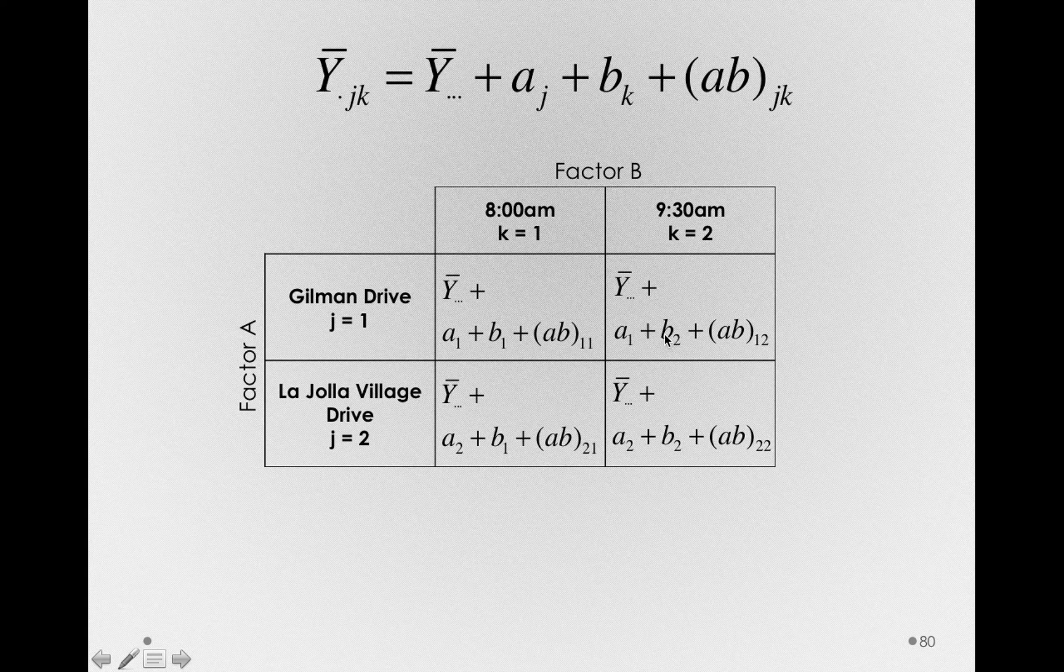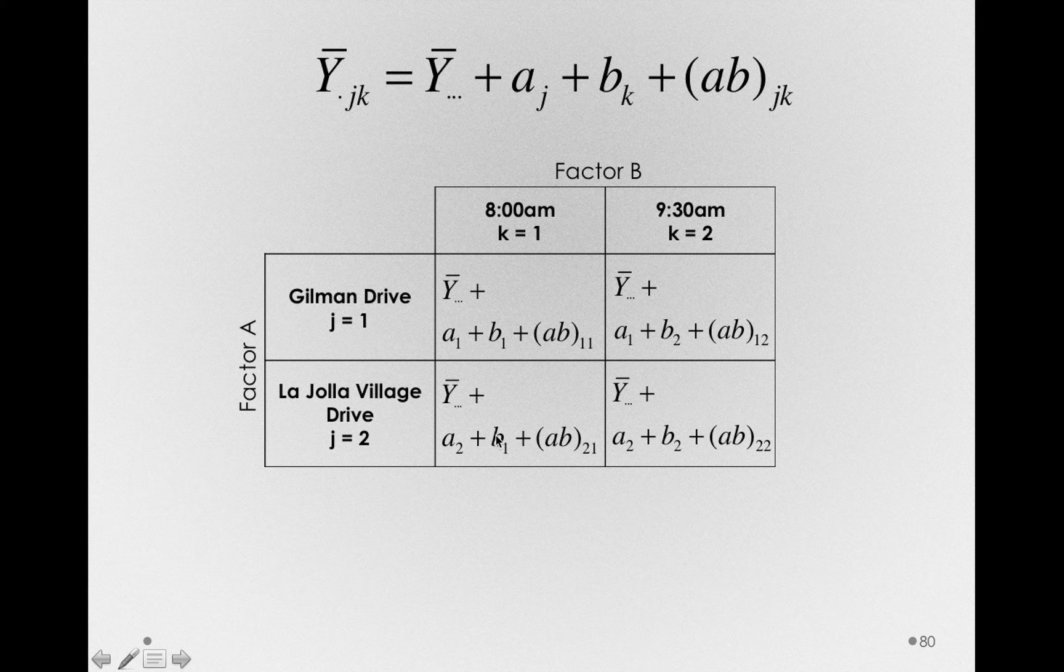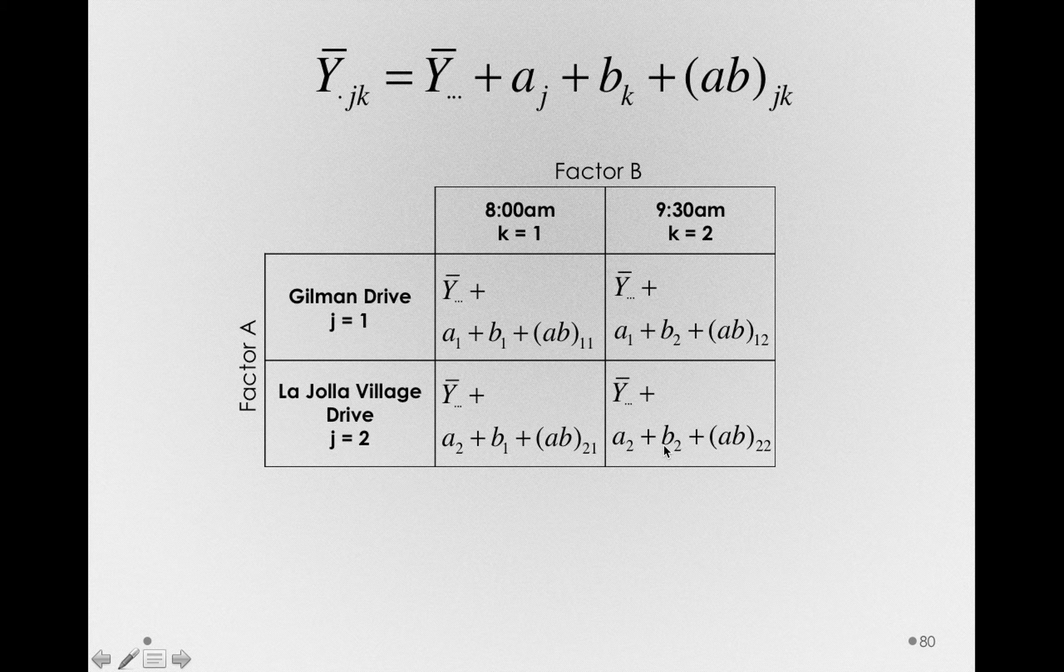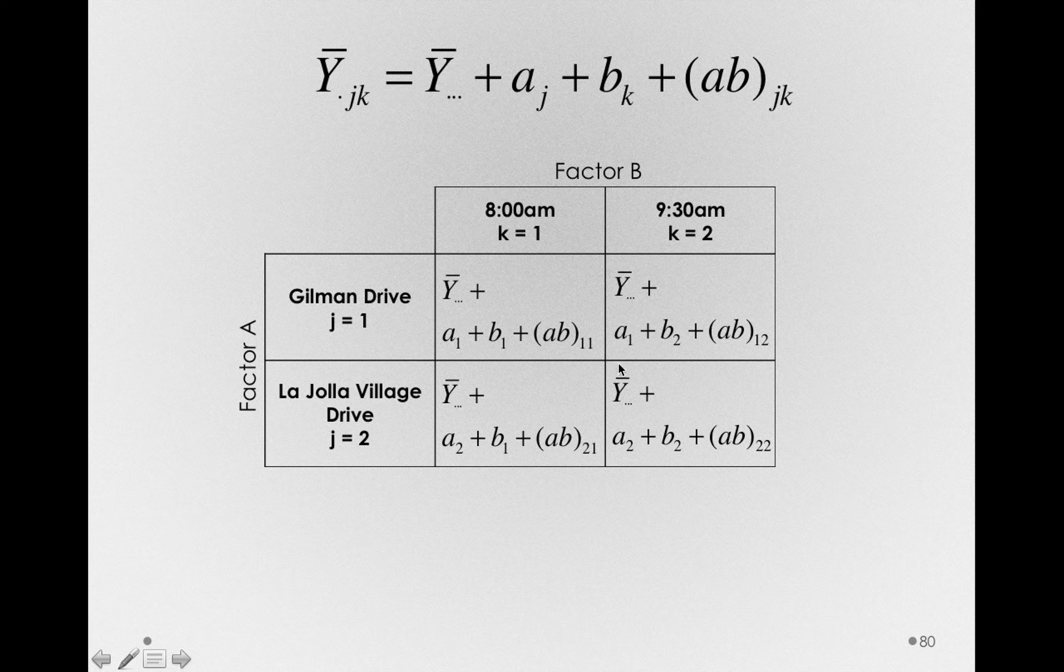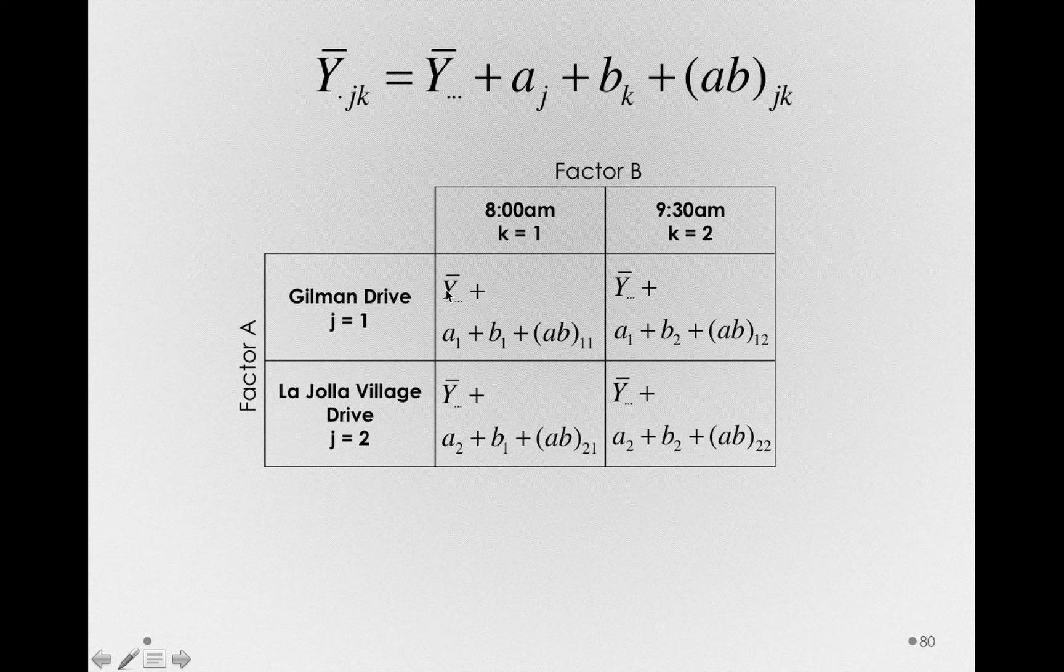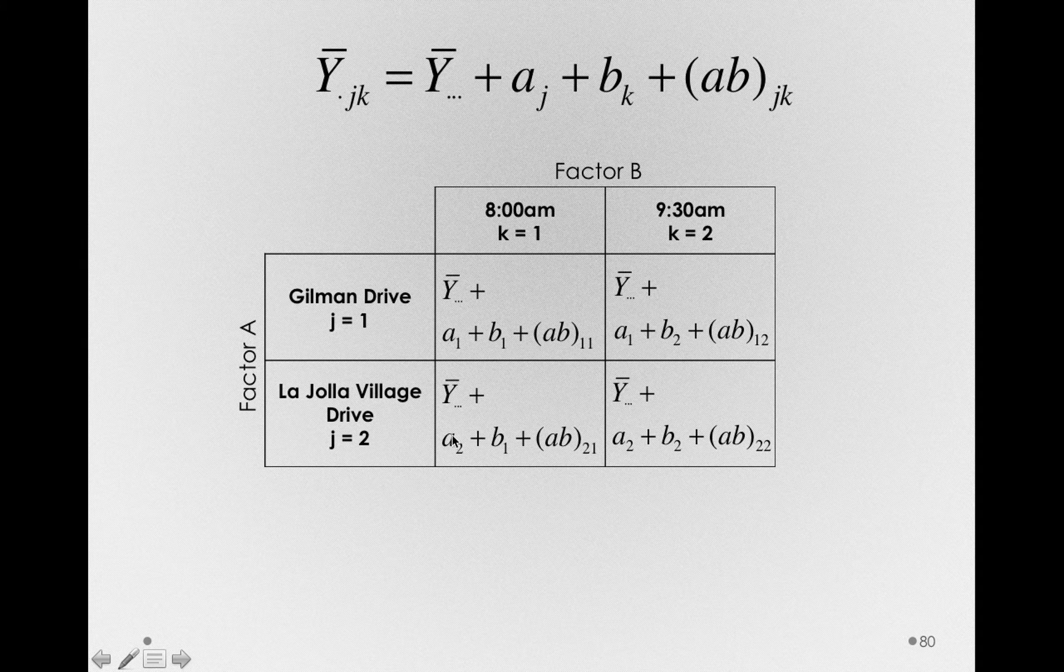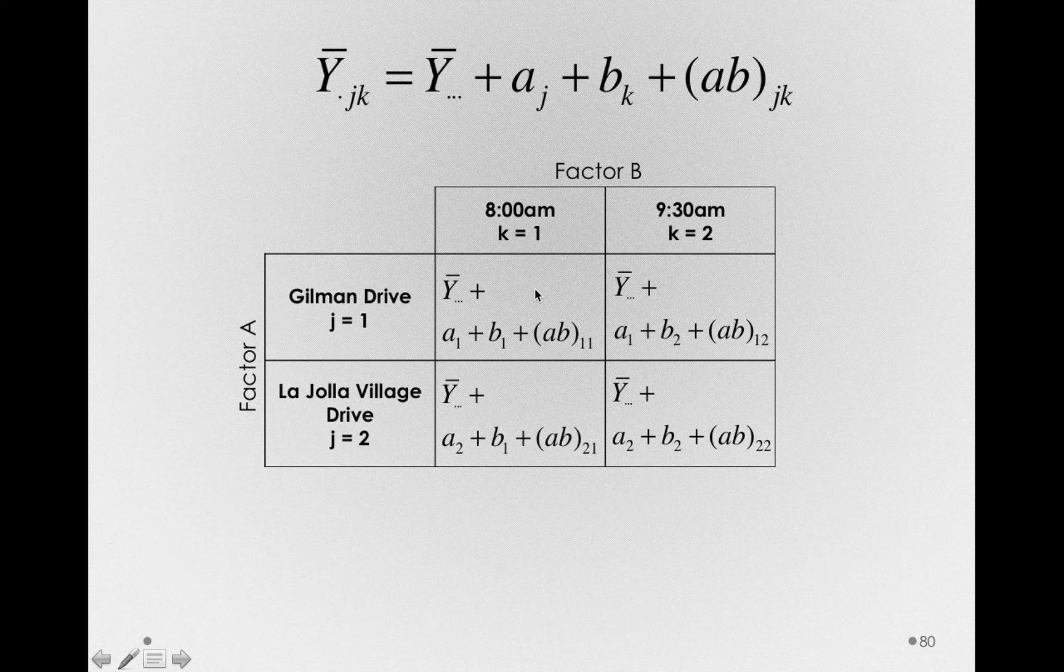Notice any time I wrote B2, it is simply redundant. So B1 and B1 are the same value, and B2 and B2 are the same value. Similarly, A1 and A1 here are the same value, and A2 and A2 are the same value. So far we have Y bar dot dot, A1, A2, B1, and B2, so five terms so far.